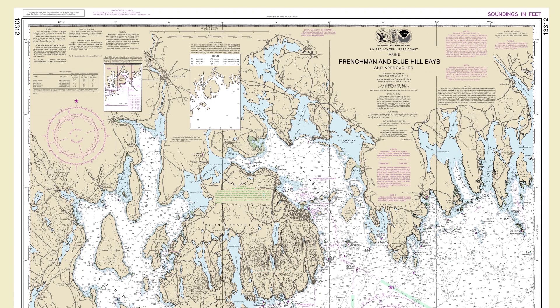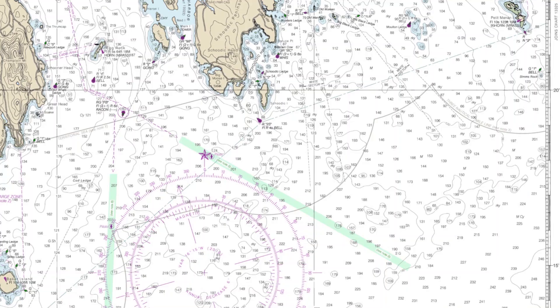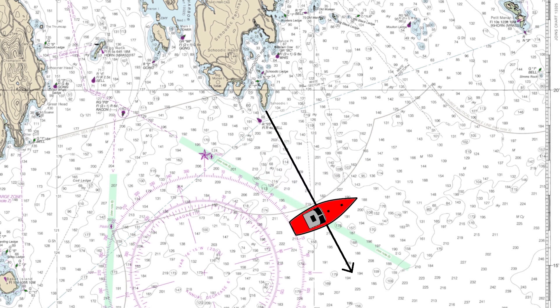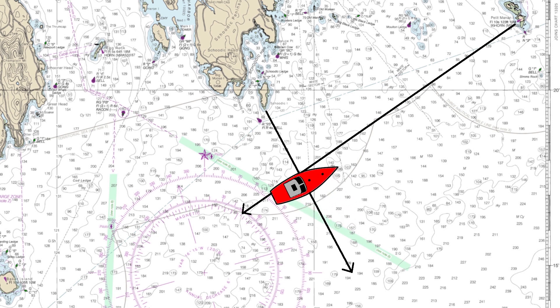So, to position fixing. All position fixing relies upon lines of position. A line of position is basically a line that you've drawn onto the chart, in the knowledge that you're somewhere along that line. The more lines you draw, the more accurate your position fix will be. All of the methods we're going to discuss are just different ways of plotting a line of position.